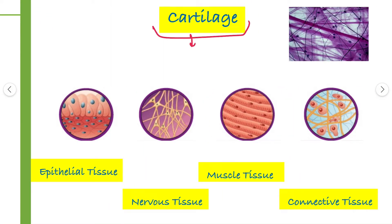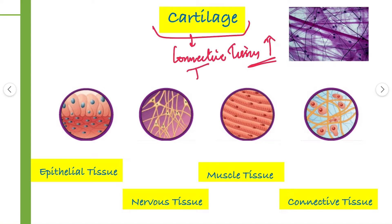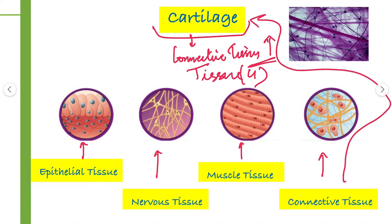Cartilage is a connective tissue, which is the most important part of our body. Before going to cartilage, we must know that our body has 4 types of tissues: Epithelial tissue, Nervous tissue, Muscle tissue, and Connective tissue. So cartilage falls under the Connective Tissue category.